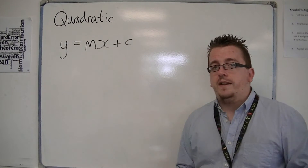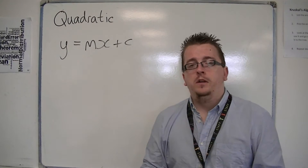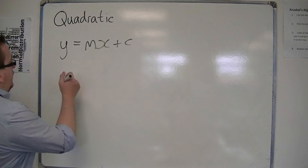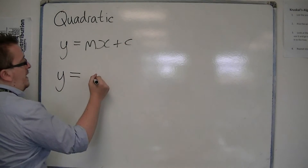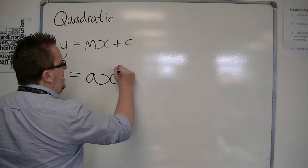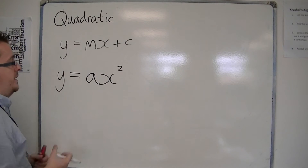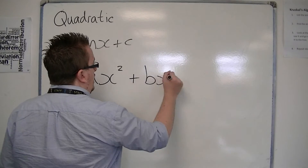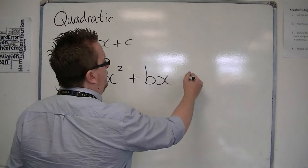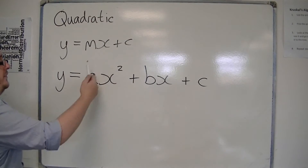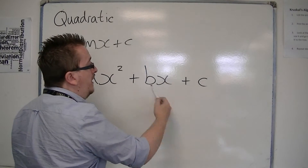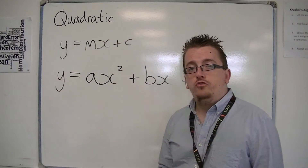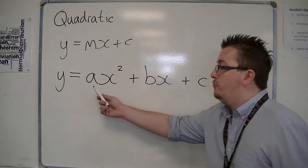When you go into quadratics, that just means we're going up by one power — we're going up to x-squared. With x-squared, we could have any number of x-squareds to make it quadratic. We could also have a linear term and a constant term. So this gives us the quadratic term, the linear term, and a constant — and this is the general format for a quadratic equation and a quadratic curve.